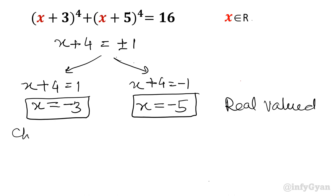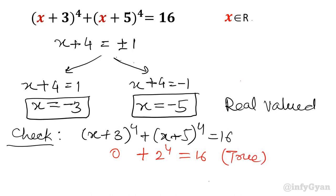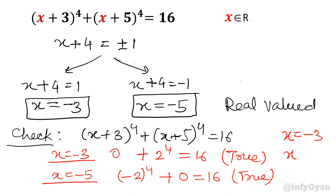Now let's check in the equation (x+3)^4 + (x+5)^4 = 16. If x = -3, then it will be 0^4 + 2^4 which equals 16, so true. When x = -5, it will be (-2)^4 + 0^4 which makes no difference, means it would be 2^4 which is 16, again true. So our final solution is x = -3 and x = -5.